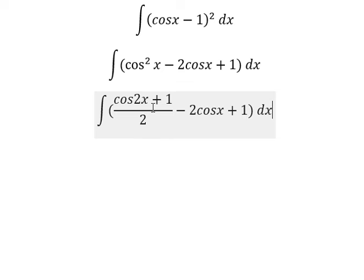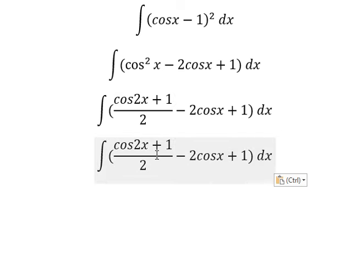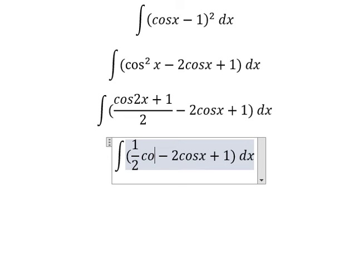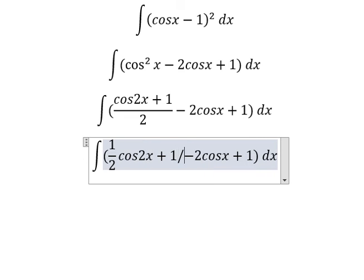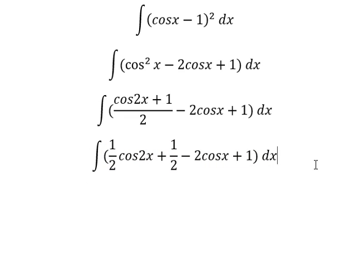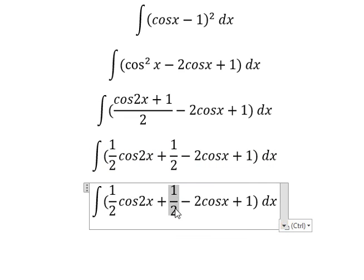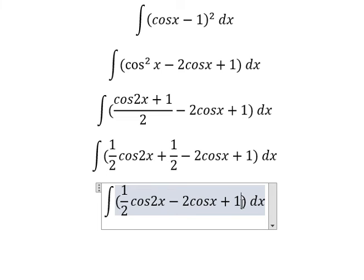This is about trigonometric identity. So we will have about 1 over 2 cosine 2x plus 1 over 2. Number 1 and 1 over 2, we have 3 over 2.